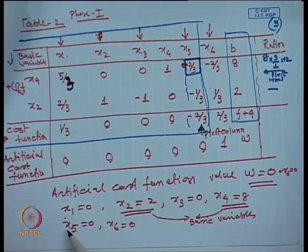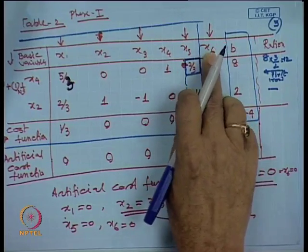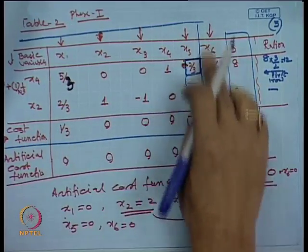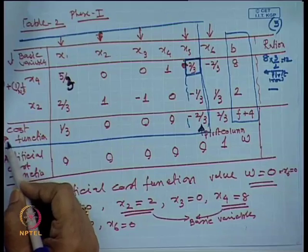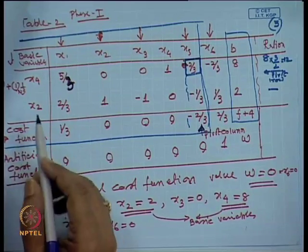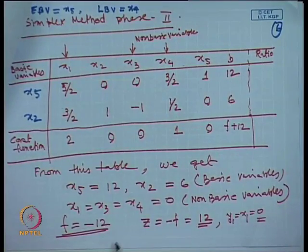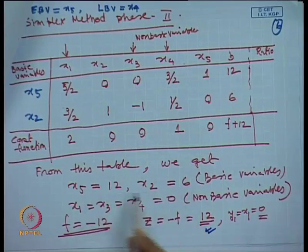Corresponding to the design variables x1, x2, x3, x4, x5, and x6, we obtained specific values. In Phase 2, since x6 was minimized (w = 0), we ignored x6 in the table and optimized the original objective function. After completing Phase 2, we obtained f = 12 with corresponding variable values for x1, x2, x3, x4, x5.